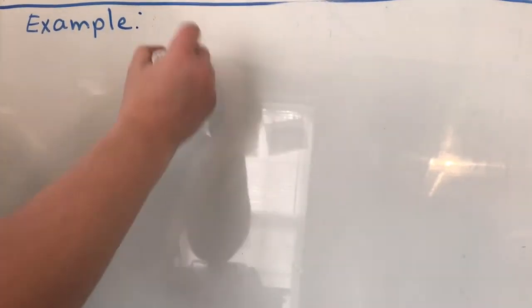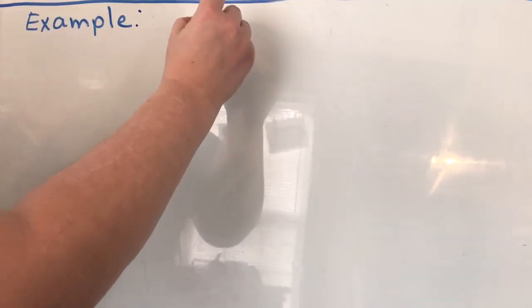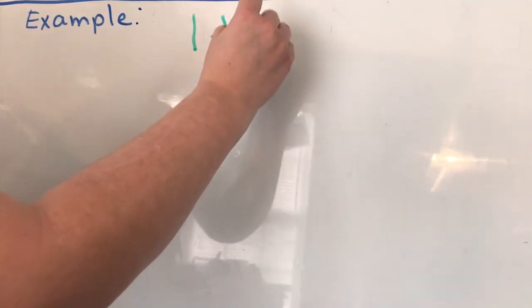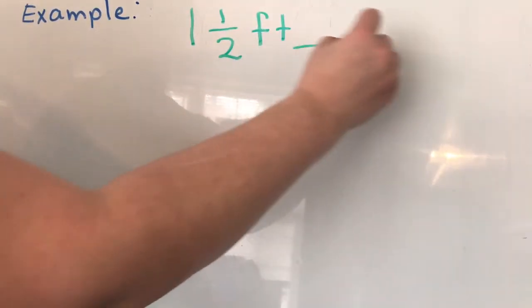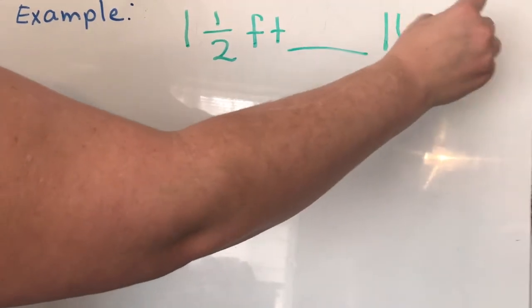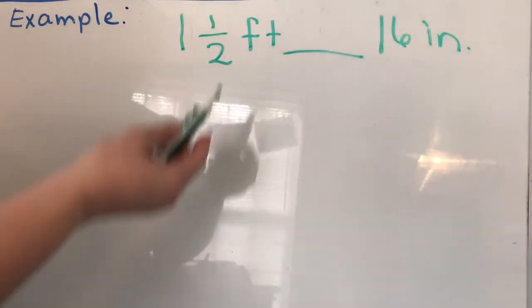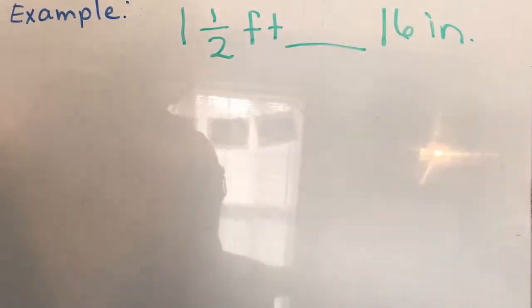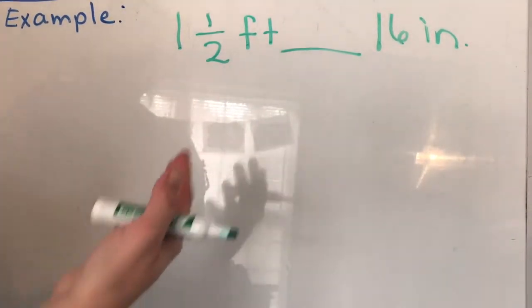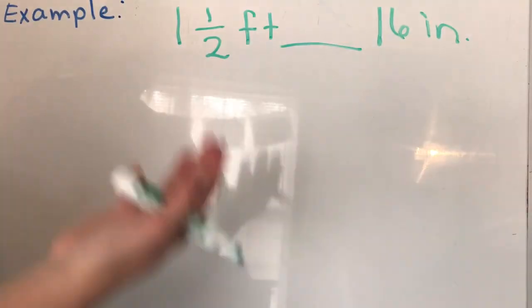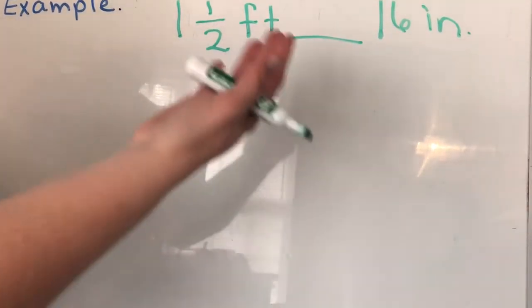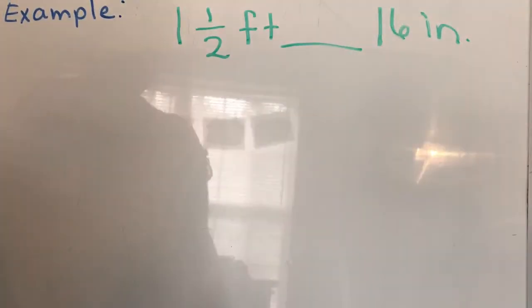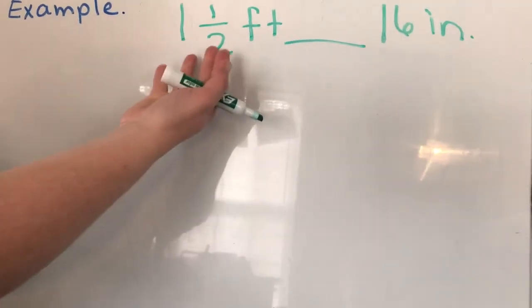Now we're going to come to a question where they asked us to compare. They're going to say which is bigger? Make a comparison. One and one half foot or 16 inches. We can do it either way. We can turn everything into feet or we can turn everything into inches. But you have to have it the same in order to compare apples to apples or oranges to oranges. But you can't compare apples to oranges. So we're going to deal with the first number first.